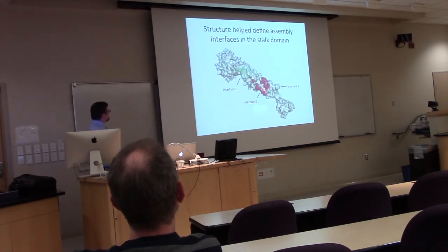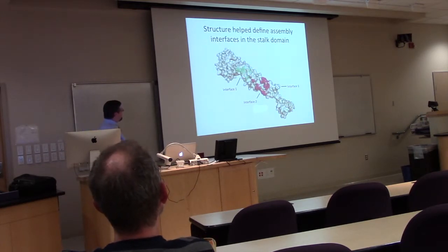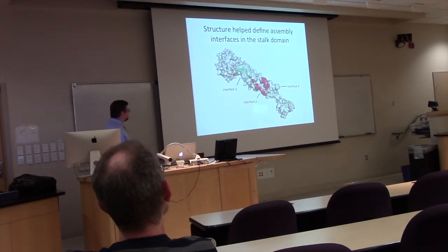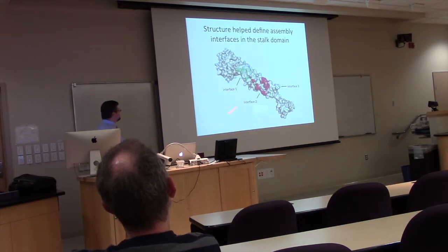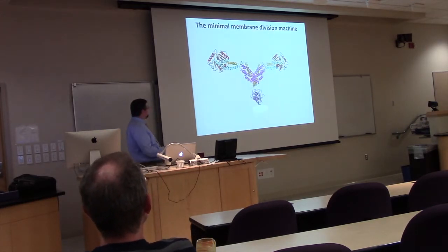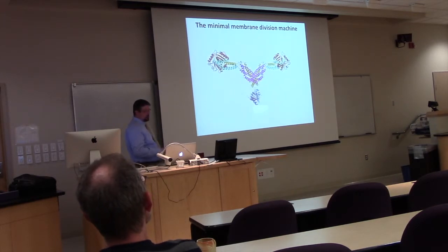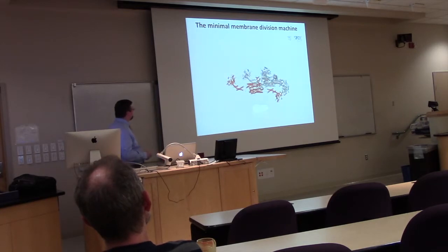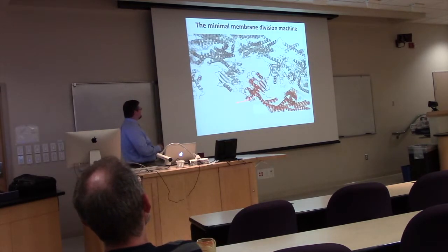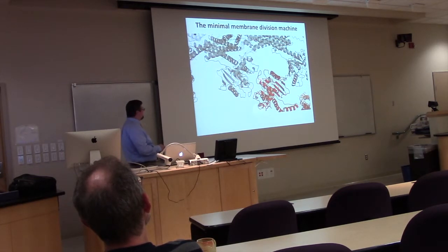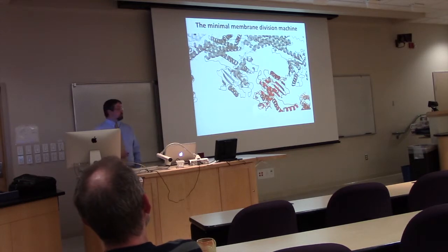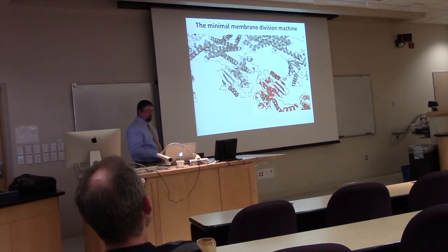The stalk domain has three interfaces. Interfaces one and three interact with other dynamin-1 particles to form large structures; interface two is the dimerization interface. Once fully assembled into a helical ring, two GTPase domains are brought together — the GTP binding site is in this interface — stimulating GTP hydrolysis by each pair of GTPase domains. This leads to conformational changes that pinch off the tubule.